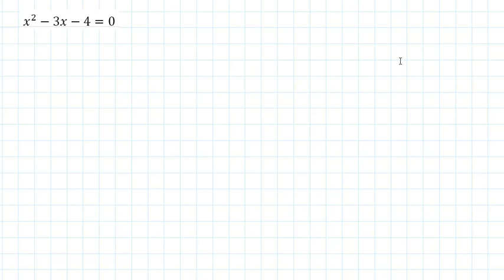What is the model of the quadrat? The model of the quadrat is: a, x², b, x, c. The model of the quadrat is a, b, c.